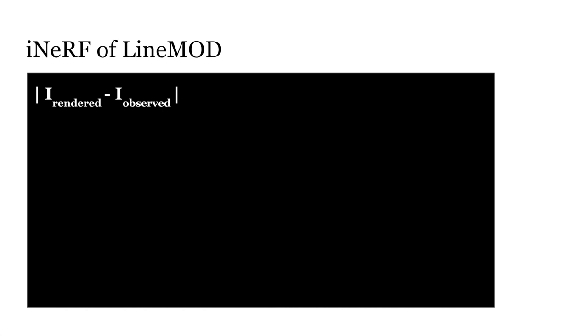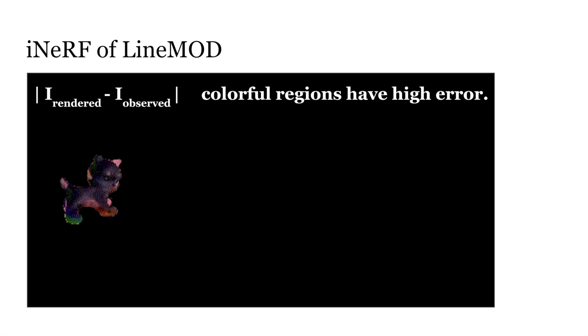We show the L1 norm between the rendered and observed images. The more colorful the images, the higher the error. We can see that the area of the colorful regions decreases during the iNeRF refinement.